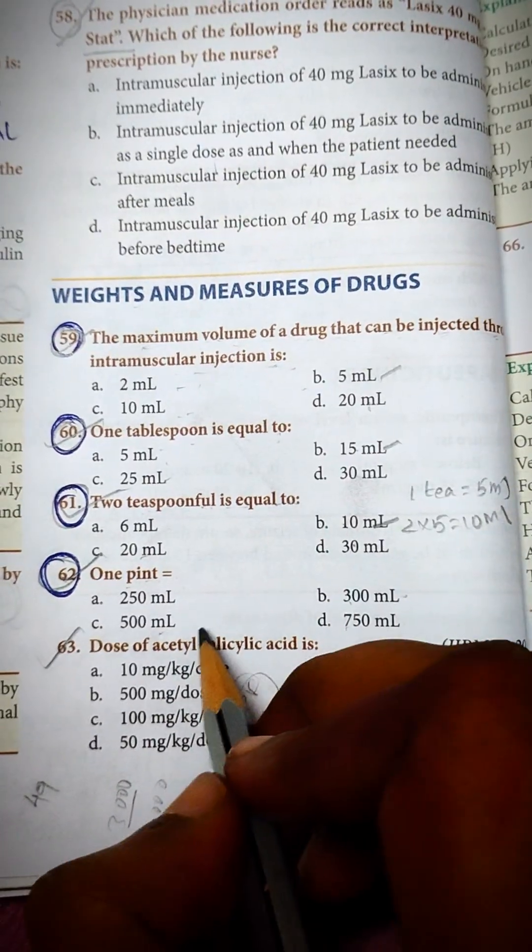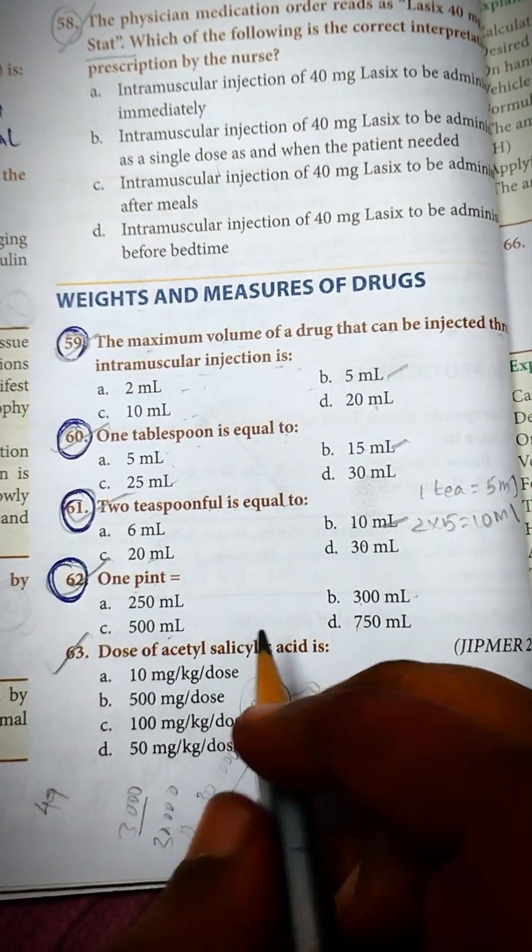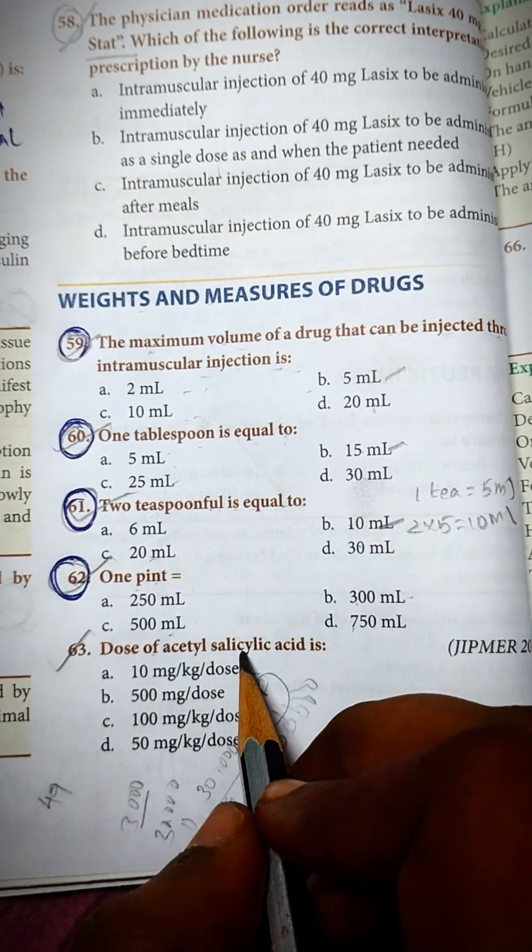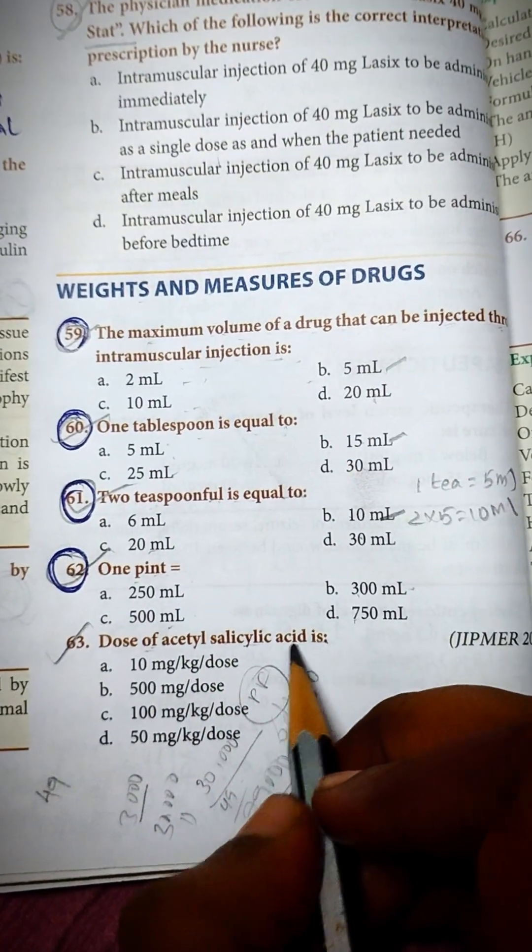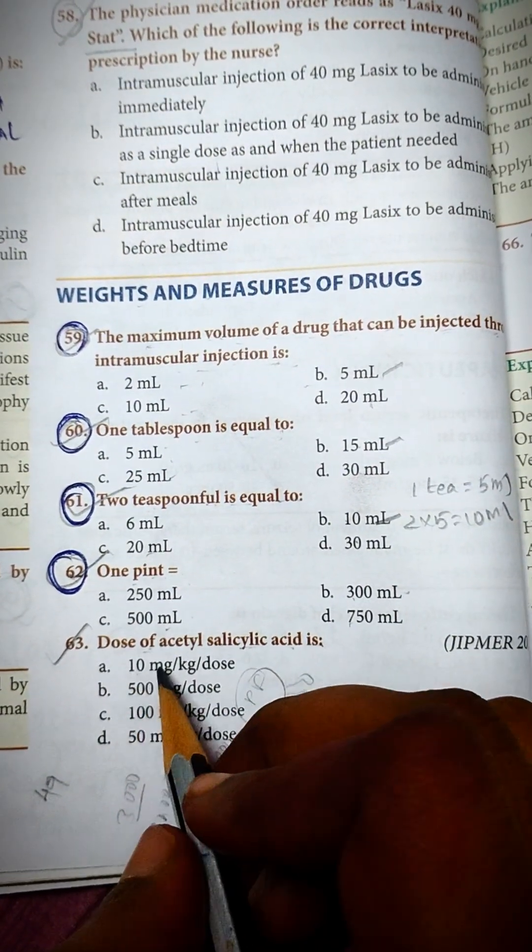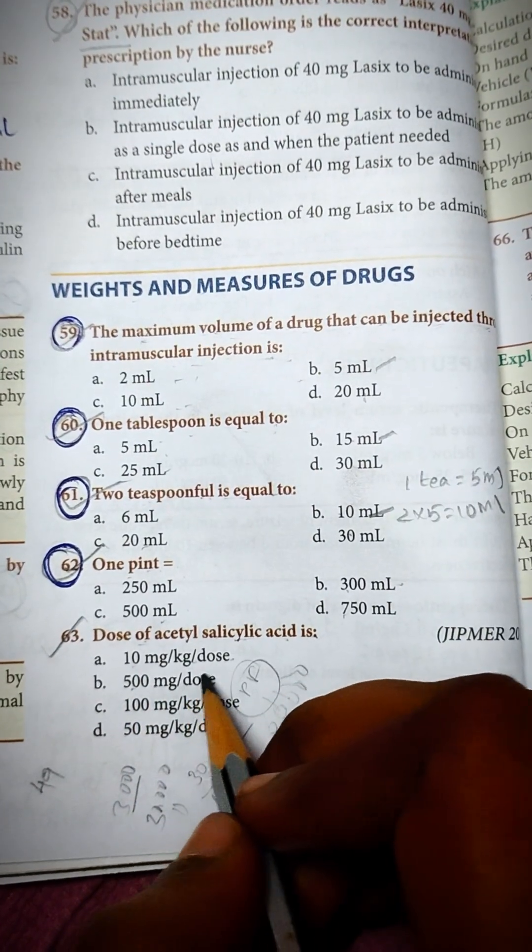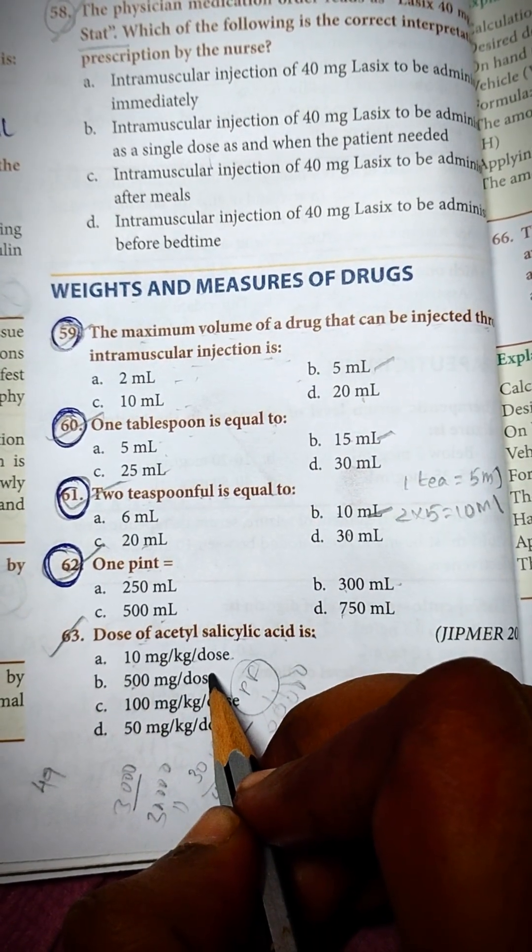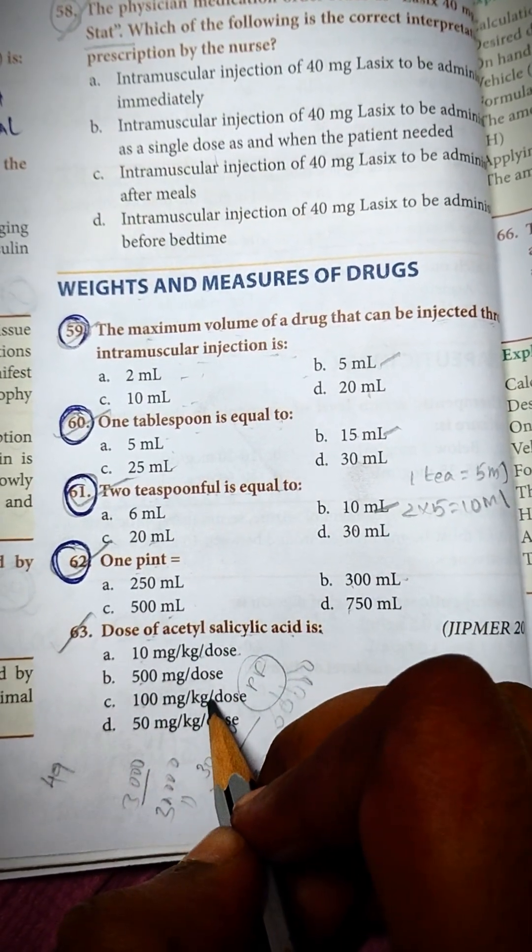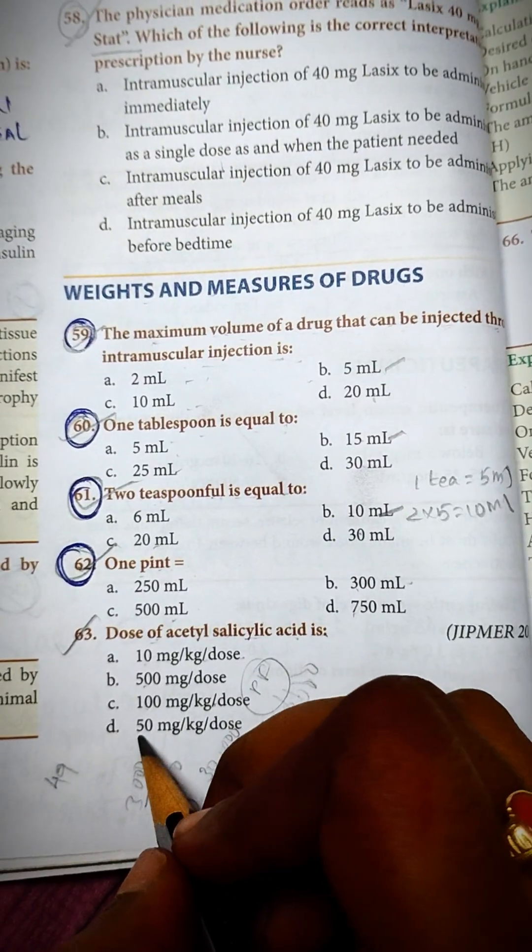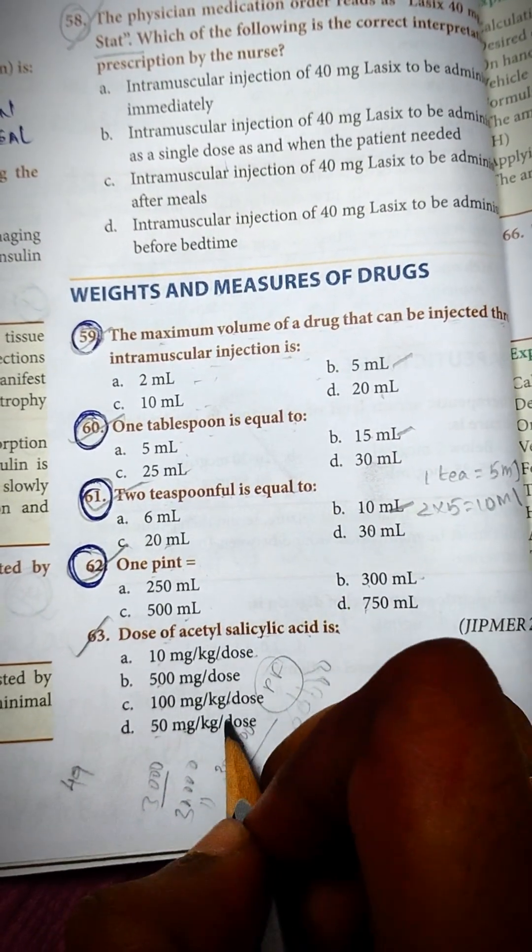Then next question: dose of acetylsalicylic acid. Dose of acetylsalicylic acid: option a, 10 ml per kg dose, option b 500 ml per dose, option c 100 ml per kg per dose, option d 50 ml per kg per dose.